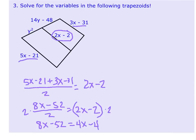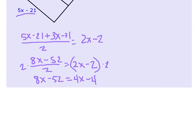And so now we're just going to solve for X. So I'm going to subtract 4X on both sides and add 52 on both sides. So we get 4X equals 48. And then when we divide by 4, we get X equals 12.